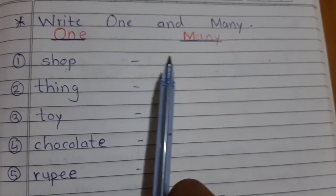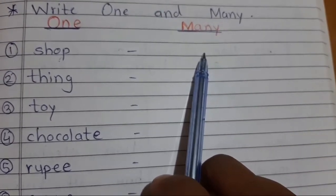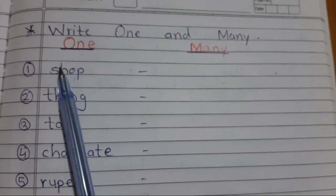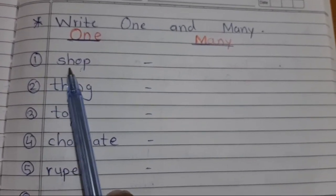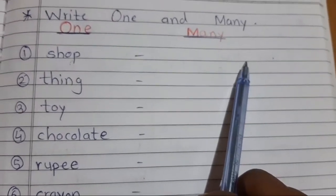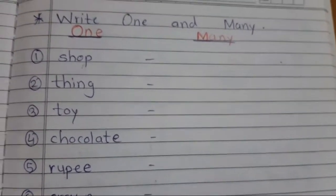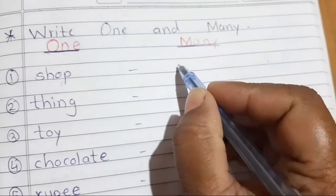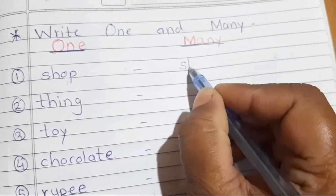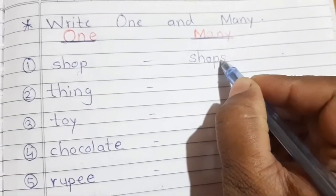So it means if the spelling is shop, so one shop, so many shops, right? Shops. Same spelling you have to write, but let me show you. S-H-O-P, shop, and just add S after it. So it will become shop, shops.